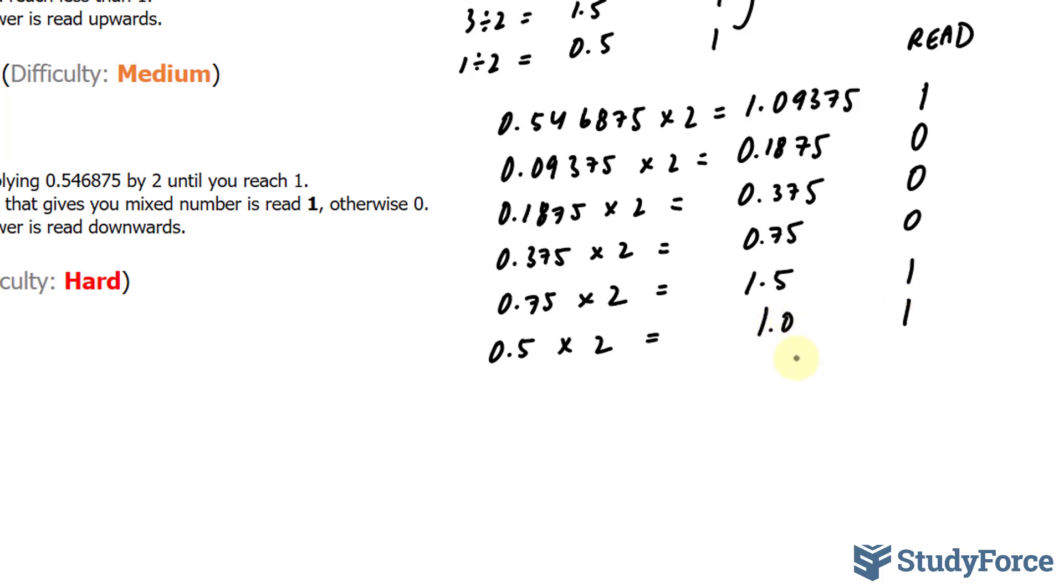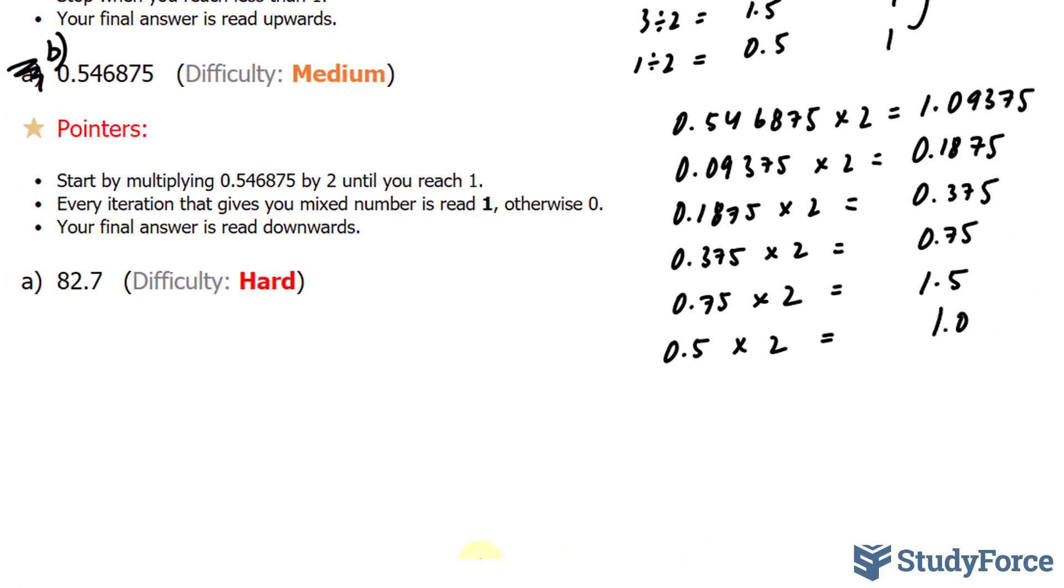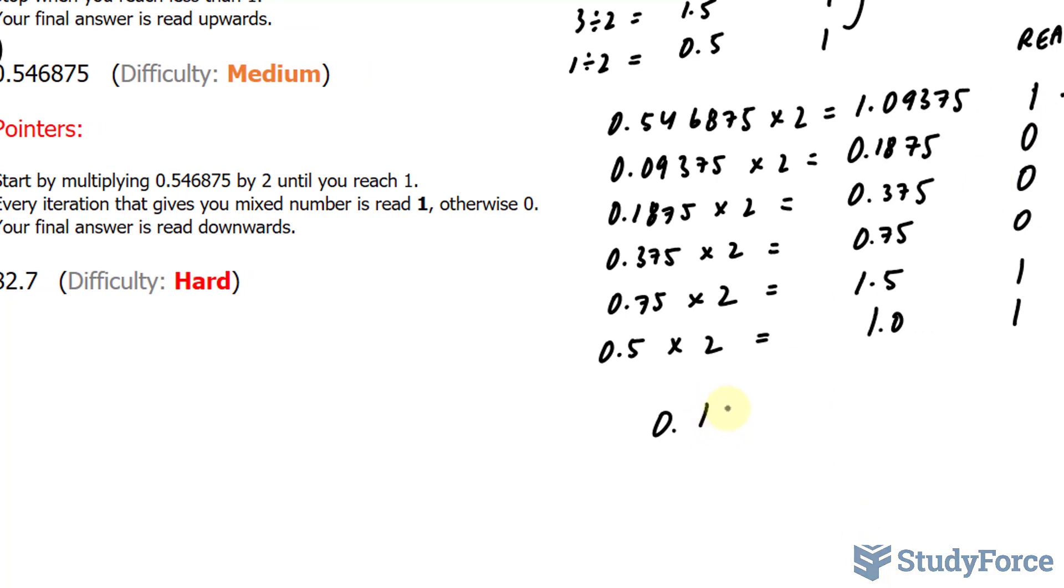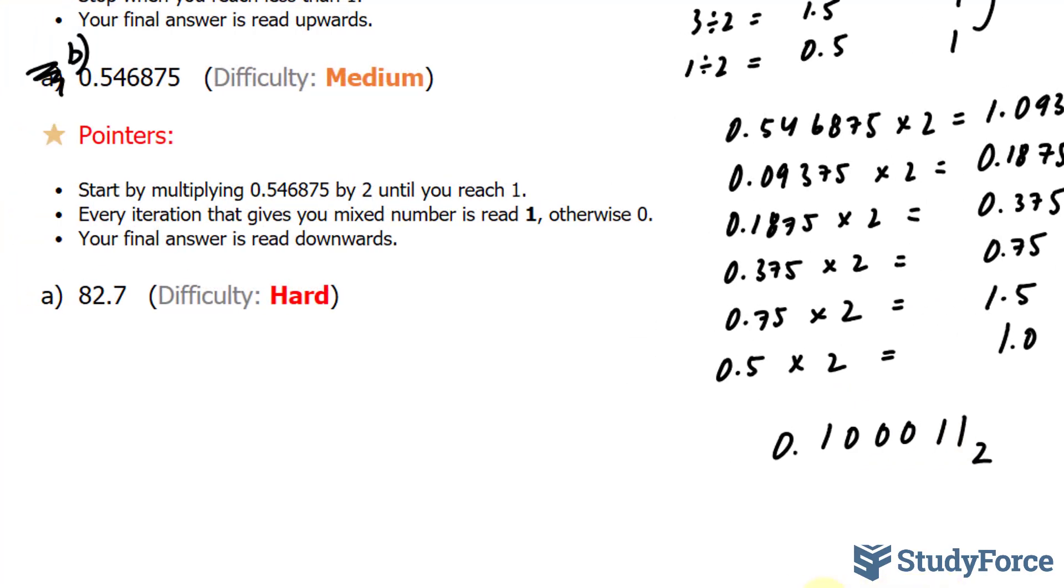That's like saying 1.0. The way you read this is downwards. Therefore, this number, this decimal number, is the same as 0.10011. And you want to distinguish a binary number from decimal by putting a subscript 2. Let's move on to the last question.